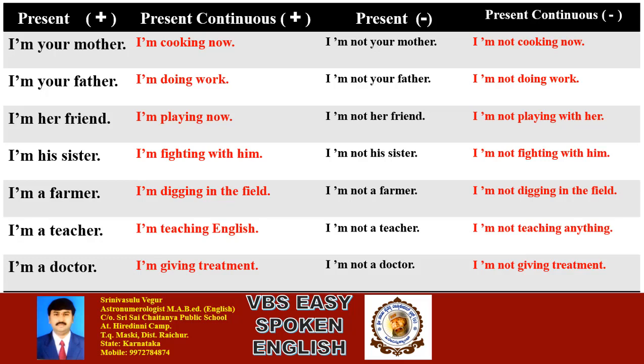For negation: I am not your mother. I am not cooking now. So the four sentence types are: I am your mother. I am cooking now. I am not your mother. I am not cooking now.